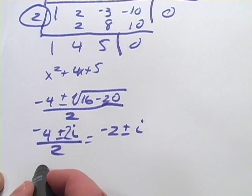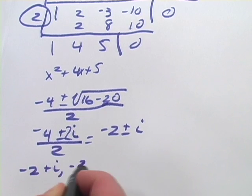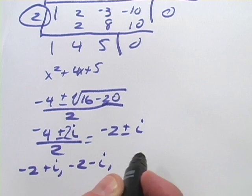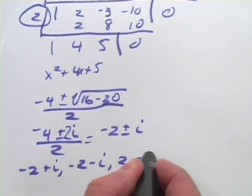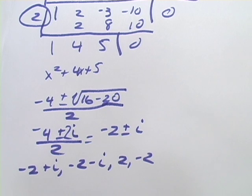So now our roots are going to be negative 2 plus i, negative 2 minus i, and then we had 2 and negative 2 from our synthetic division. So those are all the zeros of that polynomial.